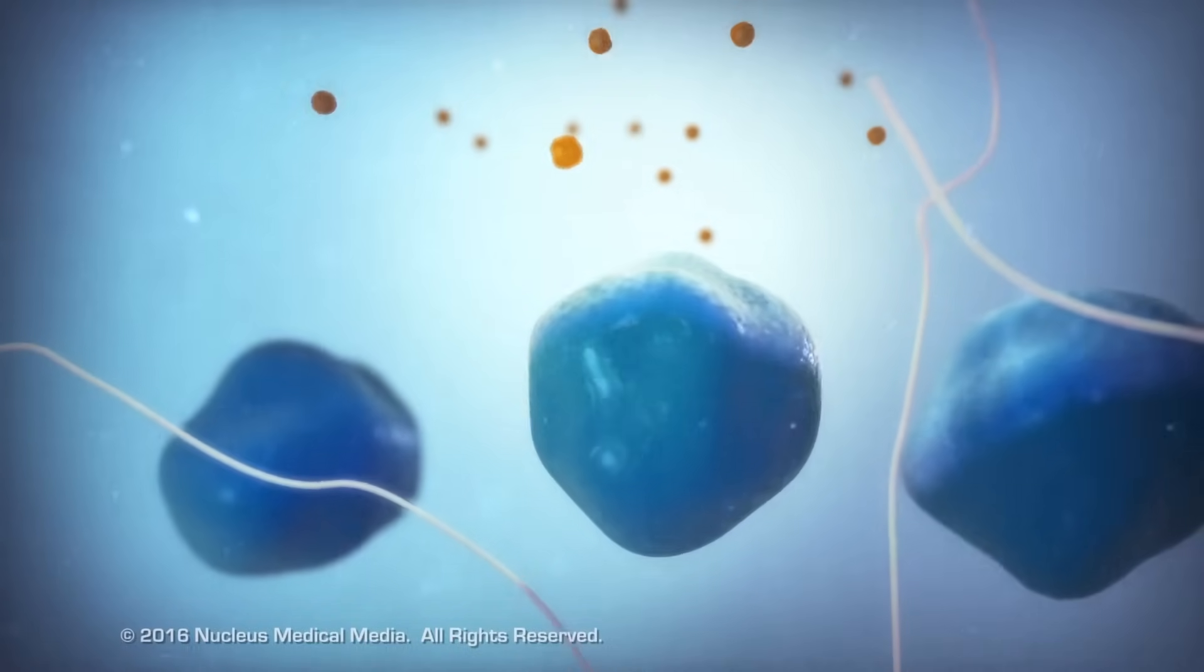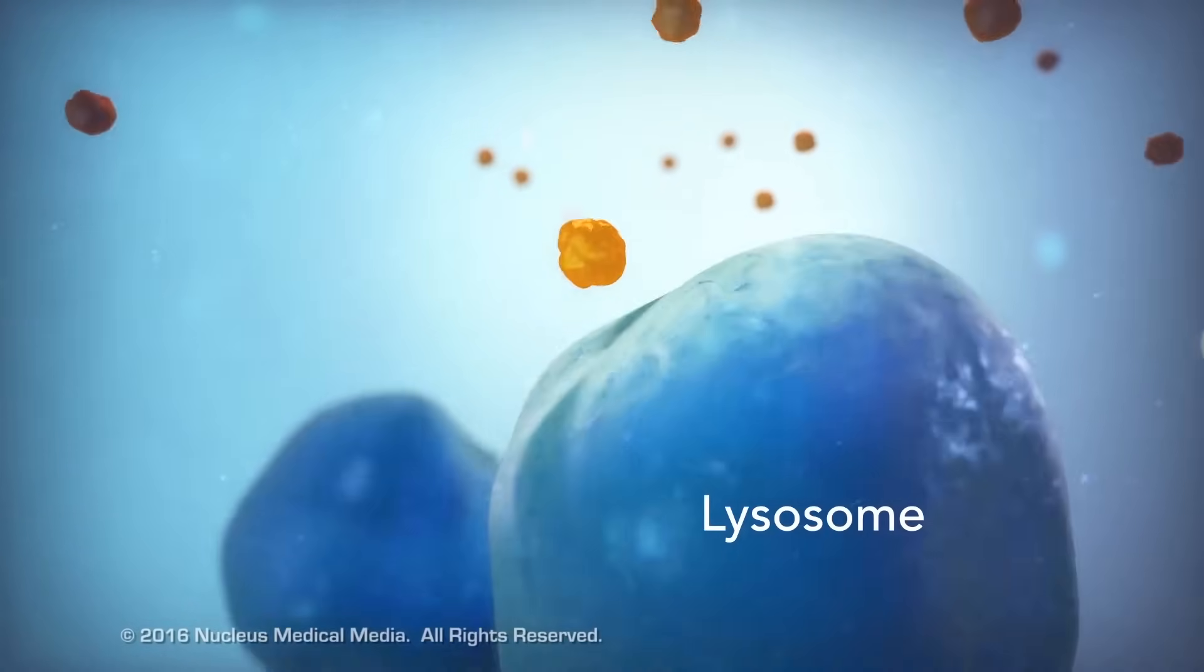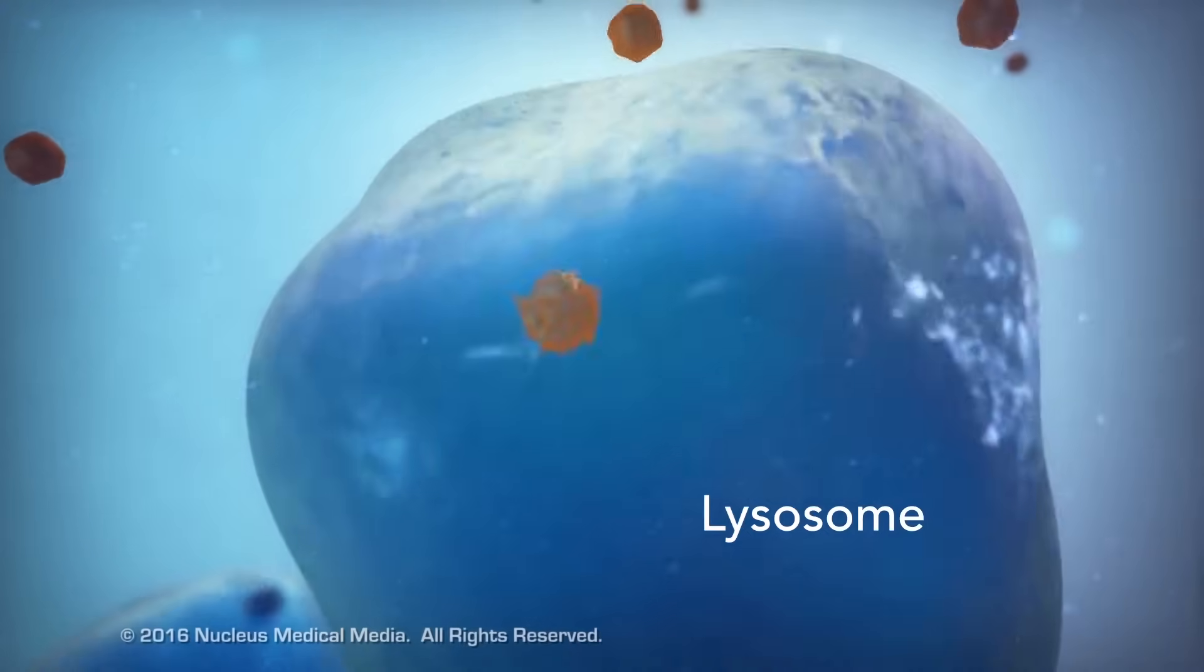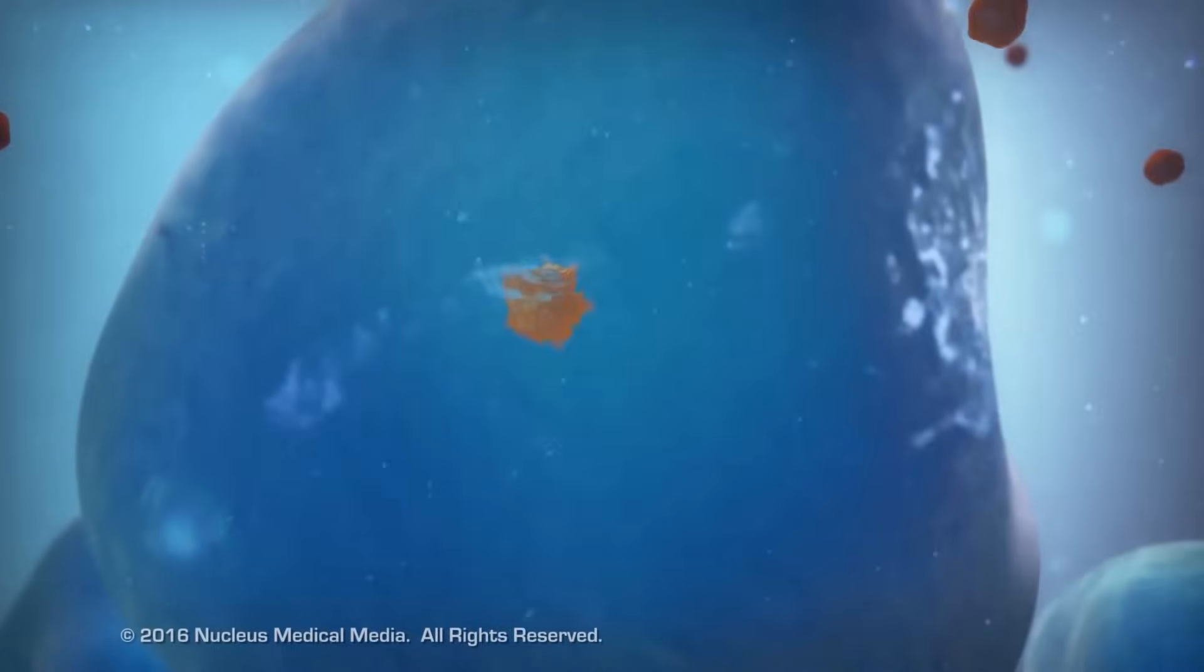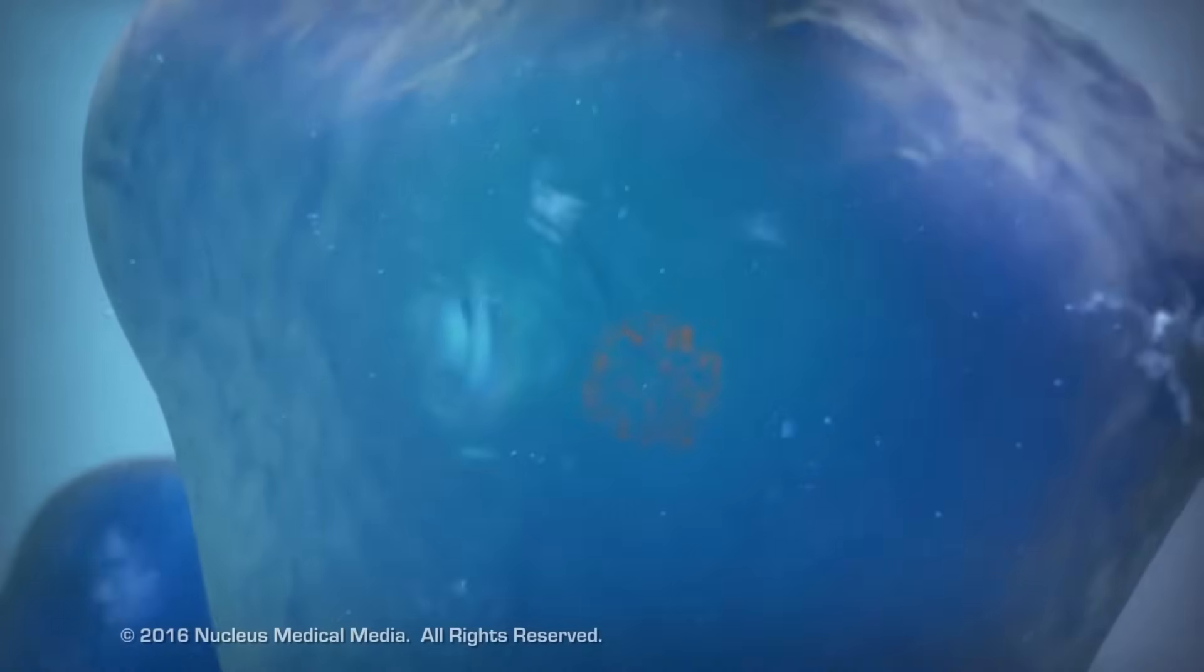Going back to the animal cell, you will see an organelle called a lysosome. Lysosomes are the garbage collectors that take in damaged or worn-out cell parts. They are filled with enzymes that break down this cellular debris.